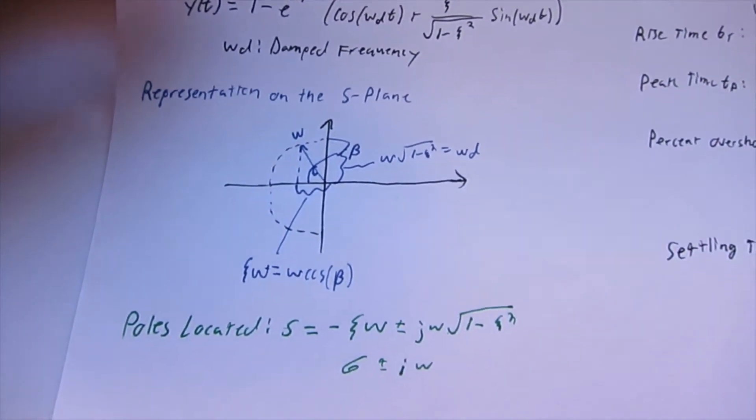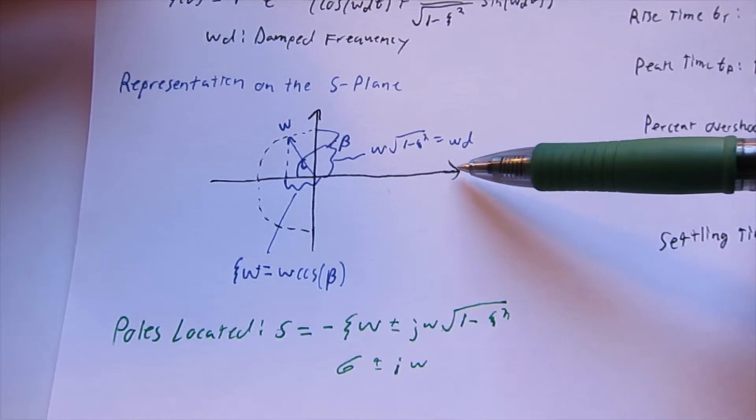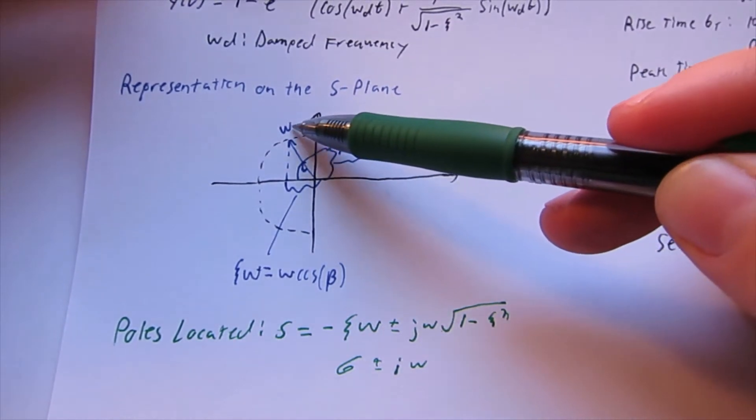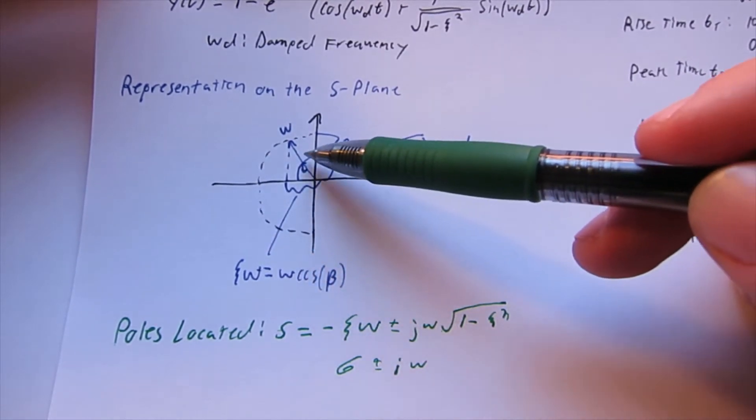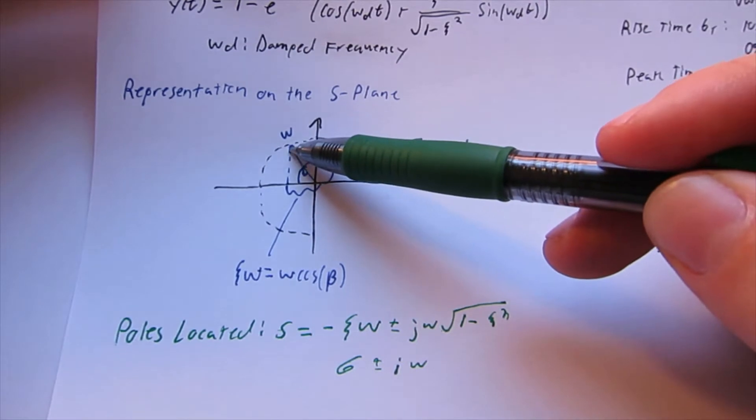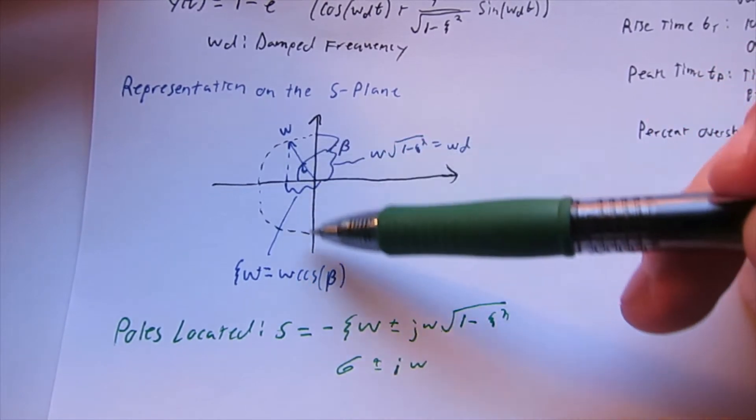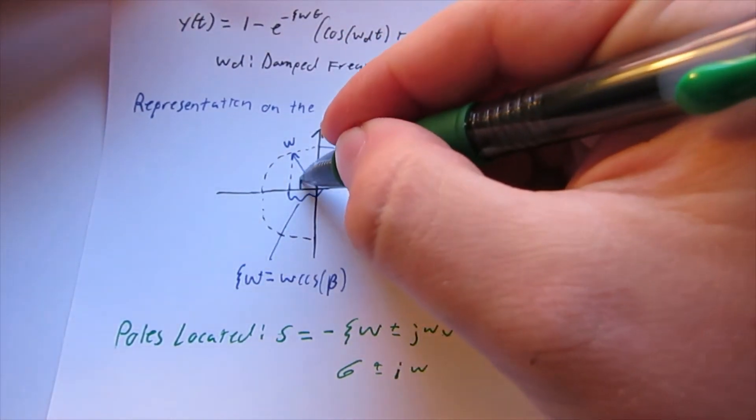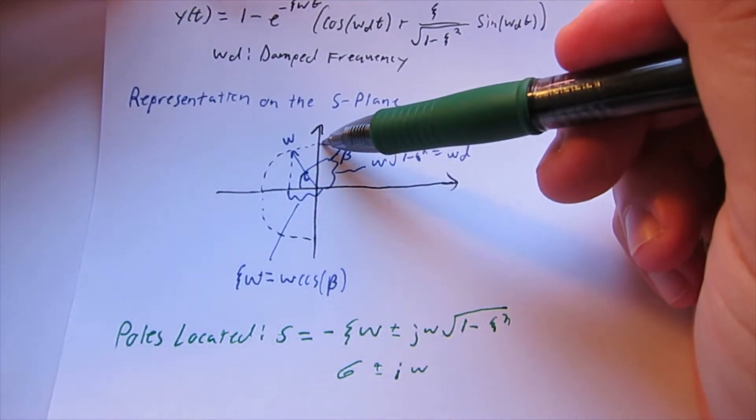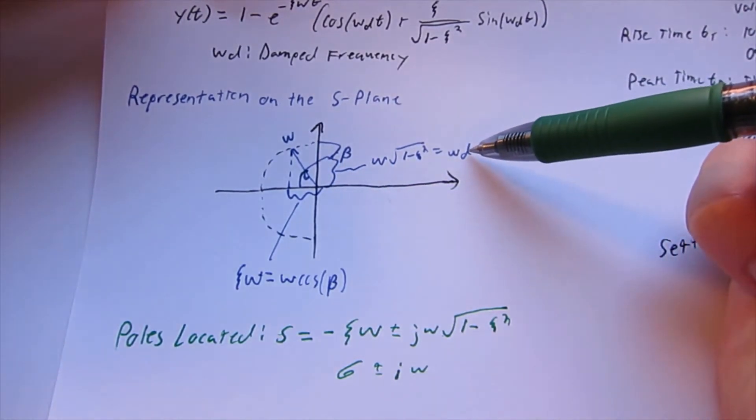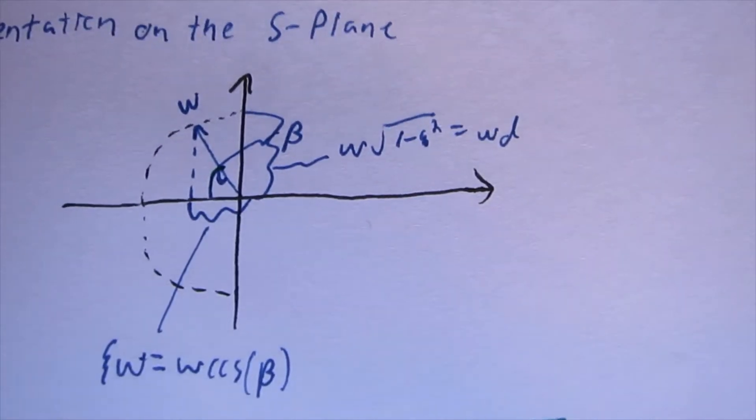So then this is what our representation on the s plane would look like. We have our real axis, our imaginary axis, we have this omega here. So at every point along this dotted line, that would be a value of omega. If you break up the components of this arrow right here, we have zeta times omega, which also equals omega cosine beta. This angle in here is our beta angle. The real component is our damped frequency, which is our natural frequency times the square root of 1 minus zeta squared.